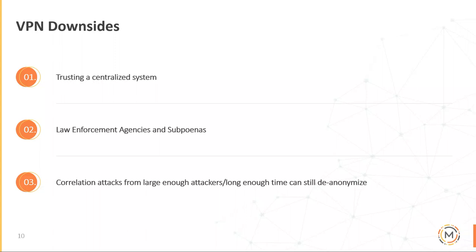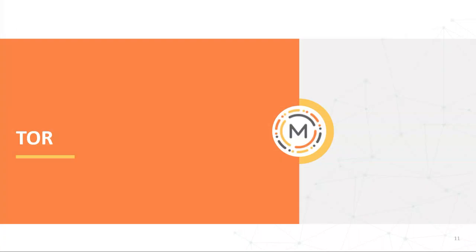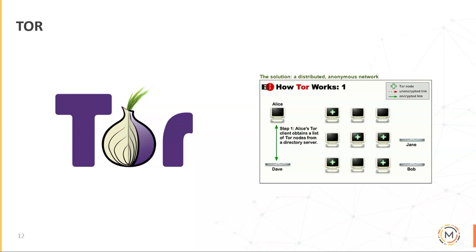Another tool we can use today besides VPNs is Tor. Most of us know what Tor is, but I'll give a high-level rundown of what Tor aims to accomplish. Tor is the onion router — it uses onion routing to route your traffic.